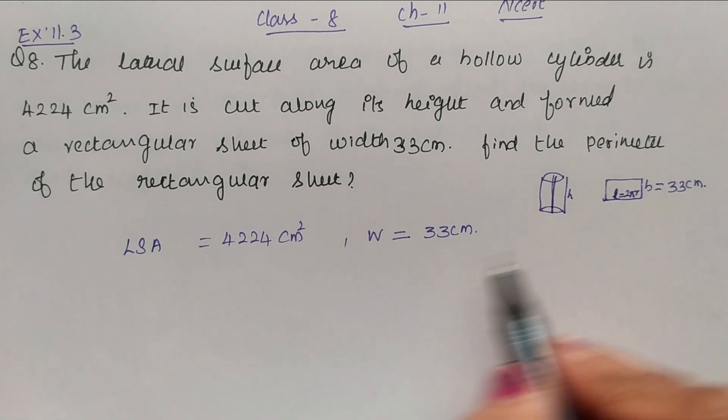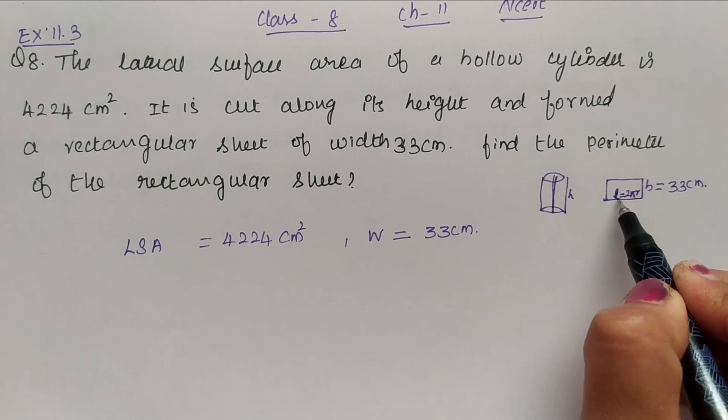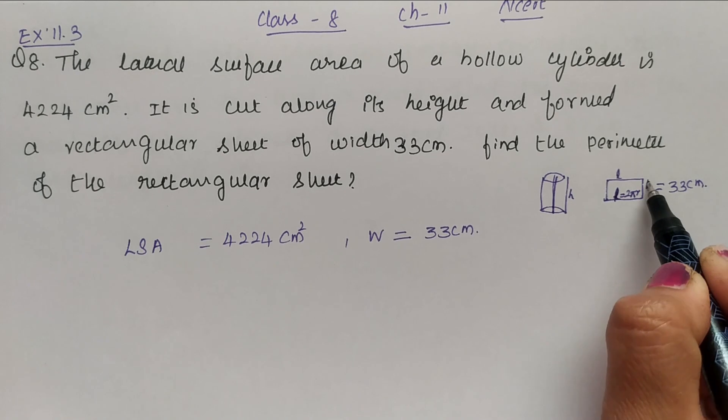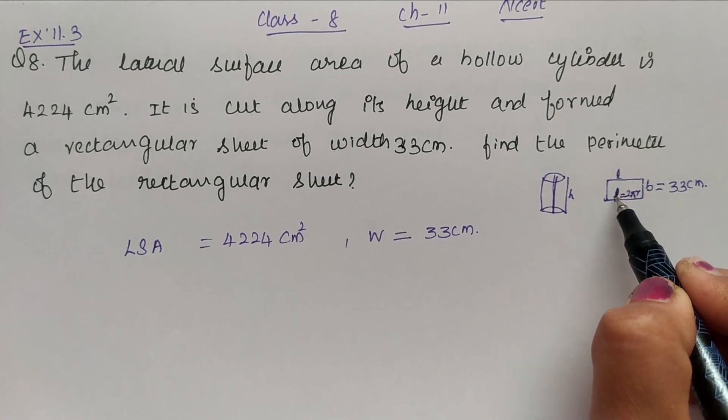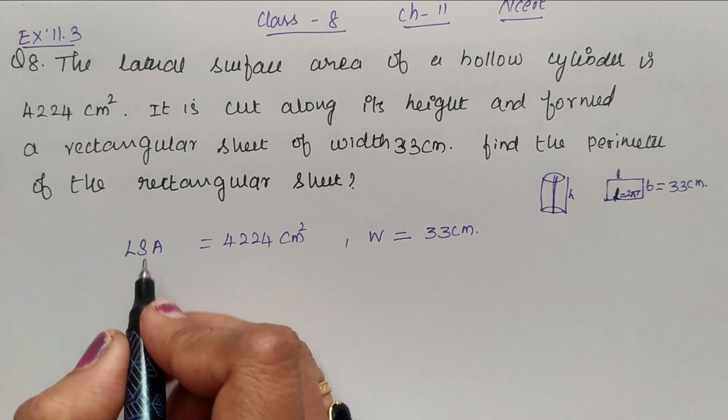Now we have to find the perimeter of this rectangular sheet. To find the perimeter, we need to know the length of the rectangle L. We know breadth but we have to find L. So we can find L from the lateral surface area of a cylinder.